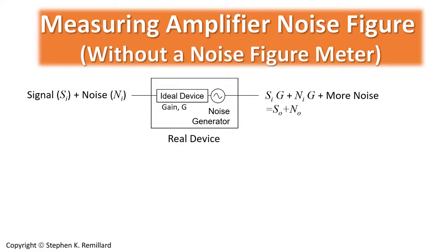The real device in this diagram is probably an amplifier, it could be a receiver, and noise figure tells you the change in the noise as a signal goes from the input to the output. So going into a device you have a signal s sub i and a certain amount of noise that's already with it n sub i.